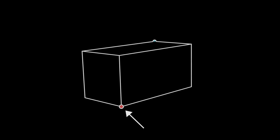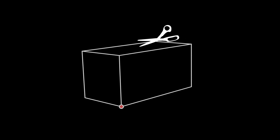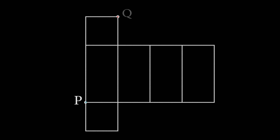Let's start by finding the distance to the point opposite of P, which I will call Q. Since we are only concerned with the surface of the box, it would make sense to think about this problem two-dimensionally. The box is three-dimensional, so we'll need to project it into two dimensions. Imagine using scissors to cut along the seams of the box so that it collapses into a 2D surface, as shown in the animation. Now it's much easier to reason about the distance from P to Q.